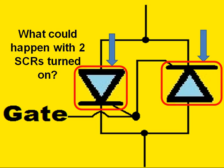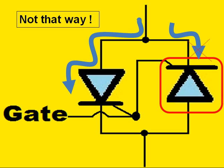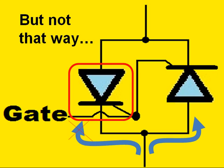What could happen with two SERs turned on? Holes could flow through this way, but not that way. Or this way, but not that way.